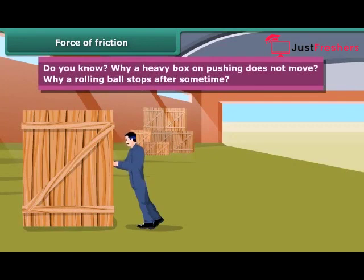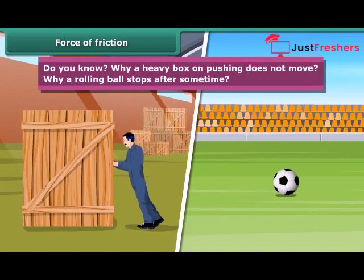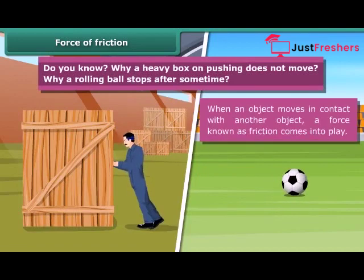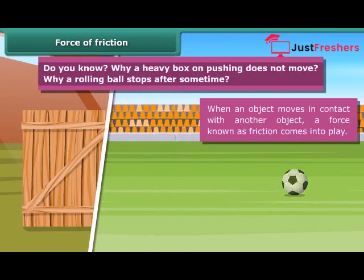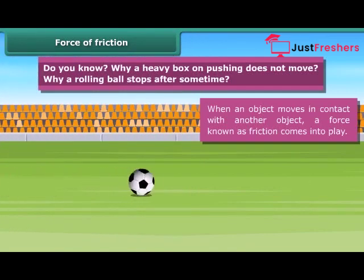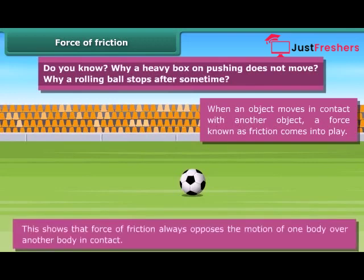Do you know why a heavy box on pushing does not move? Why does a rolling ball stop after some time? When an object moves in contact with another object, a force known as friction comes into play. Note that the force of friction always acts on all objects, and its direction is always opposite to the direction of motion. The moving object gradually slows down and ultimately stops due to the force of friction. This shows that friction always opposes the motion of one body over another body in contact.